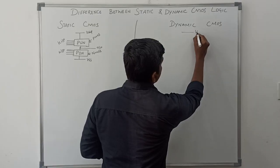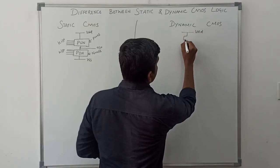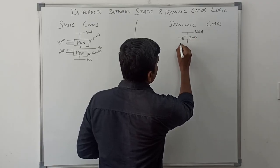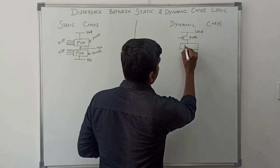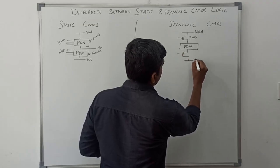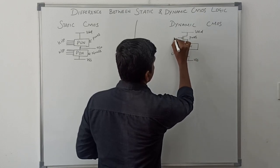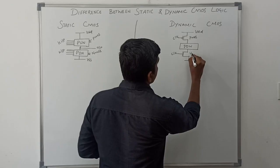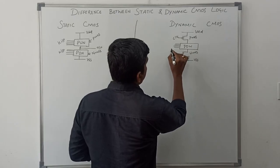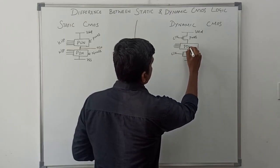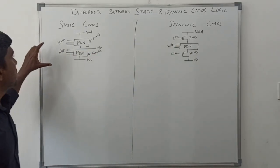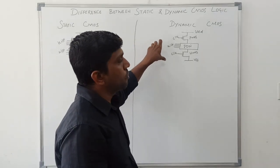Now coming to dynamic CMOS: the clocked PMOS transistor is connected to VDD, then the pull-down network, then the clocked NMOS transistor. The logic function input is connected to the pull-down network with k inputs. That is the basic structure of dynamic CMOS.